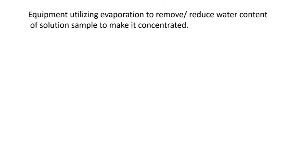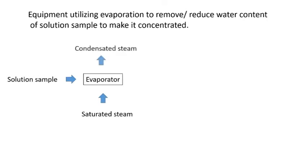Next is the basic equations involved. As you can see, the equipment is utilizing evaporation to reduce the water content inside the solution sample and to make it concentrated. You have an evaporator by allowing your solution sample to be the feed. By allowing the passing through of the saturated steam at high temperature, the steam will give out its heat energy to evaporate water content inside the solution sample and produce a concentrated solution sample with lower water content. This process involves two equations: mass balance equations and energy balance equations.